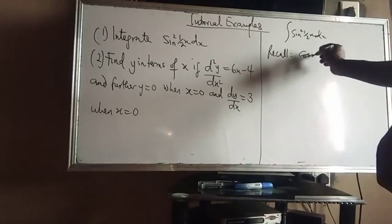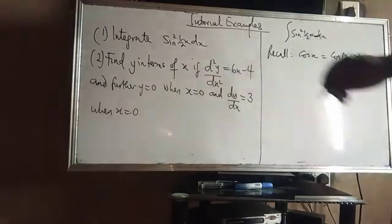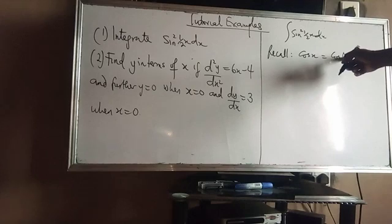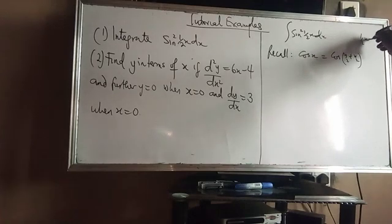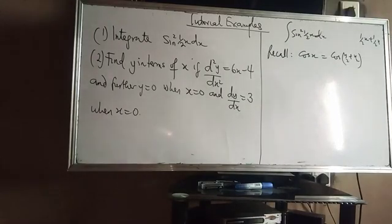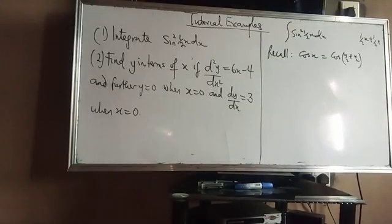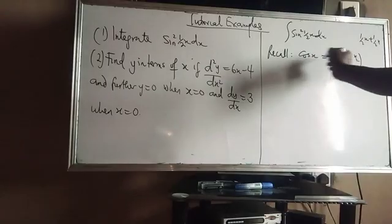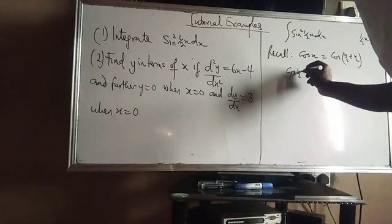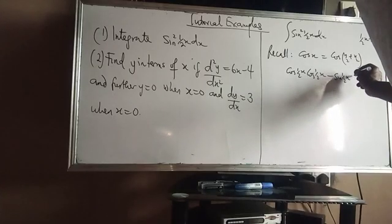Recall that cos x equals cos(x/2 + x/2). You split this — if I have half x plus half x, it would be one whole x. So if I expand cos(x/2 + x/2) using the addition angle formula, I will have cos(x/2)·cos(x/2) minus sin(x/2)·sin(x/2).